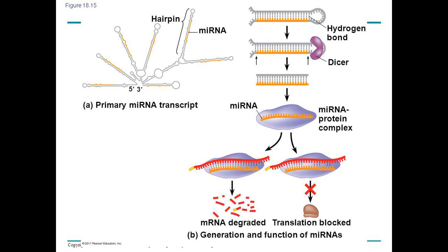Since RNA binding happens via complementary base pairing, these micro- and small-interfering RNAs are very specific, only interfering with mRNAs that possess the complementary sequences. Recall that some genes don't code for proteins, but still produce a functional RNA product, which includes RNAs like these.